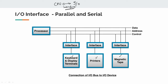So what is the intermediary? What is the reason for having an interface? The first reason is speed — the CPU speed is very high. The clock cycle is very fast, but the IO device speed is very slow.